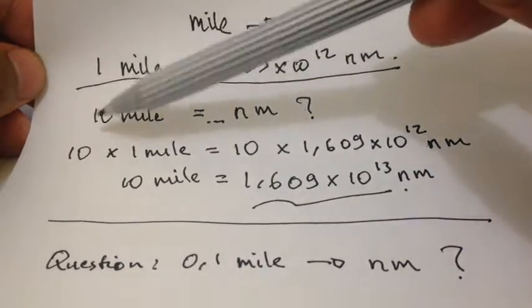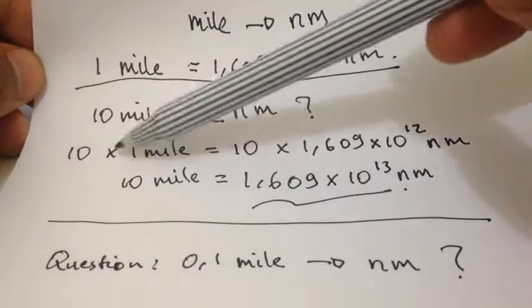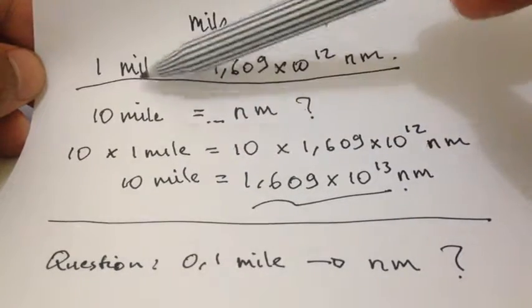To do so, we need to first put this 10 over here and multiply it with 1 mile, the basic rule.